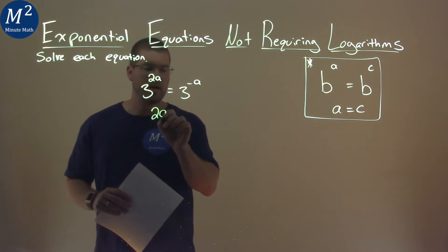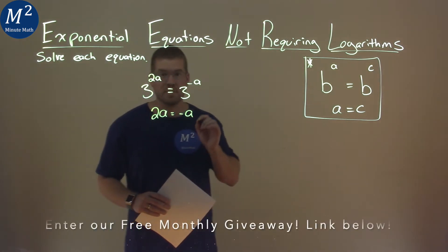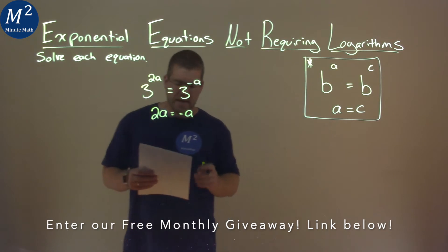So, we take 2a equals negative a, and then we're solving here. Now, this is a little tricky.